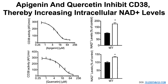That's important because NAD levels correspondingly increase. We can see that here for apigenin — NAD levels increase about 50% in the presence of apigenin, shown in the white bars for intracellular NAD levels. A smaller but still significant increase in NAD levels is also found for quercetin.